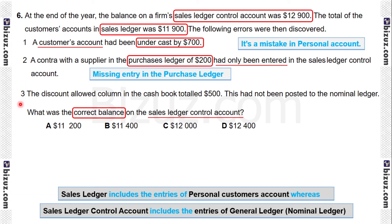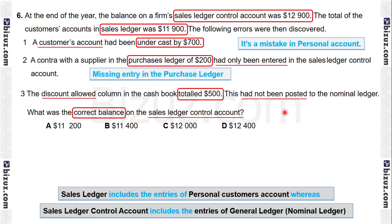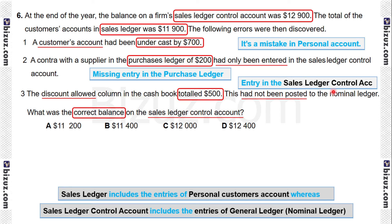Error number three: the discount allowed column in the cash book totaled 500. This had not been posted to the nominal ledger. The nominal ledger is part of the sales ledger control account, so the discount allowed had not been posted to the sales ledger control account. Therefore, we have to adjust this discount allowed entry in the sales ledger control account.